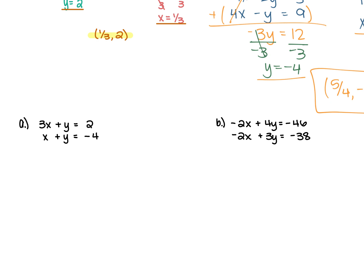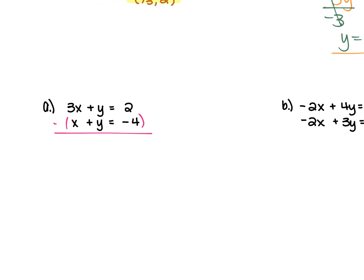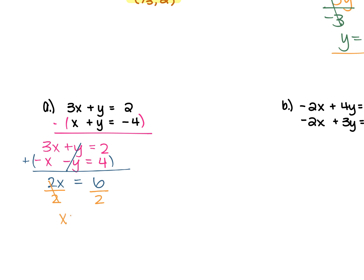In example A, we have 3x plus y equals 2, and x plus y equals negative 4. Because the y's have the same sign in front of them, we subtract these two equations. That gives us 3x plus y equals 2, and negative x minus y equals positive 4. Combine like terms: 3x minus x is 2x, and y minus y cancels, equal to 2 plus 4 which is 6. Divide each side by 2 and x is 3.